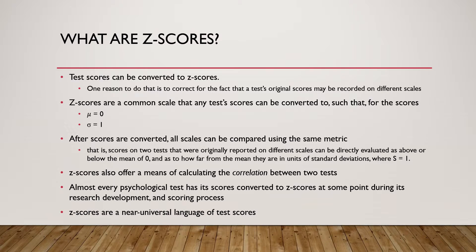Test scores can be converted to z-scores, and one reason to do that is to correct for the fact that a test's original scores may be recorded on different scales. The conversion to z-scores puts the original scores on a common scale, such that the scale has a mean of 0 and a standard deviation of 1. After the scores are converted, all the scales can then be compared on the same metric — scores on two different tests, perhaps scored from 0 to 30 in one case or from 20 to 80 in another, can be directly compared.